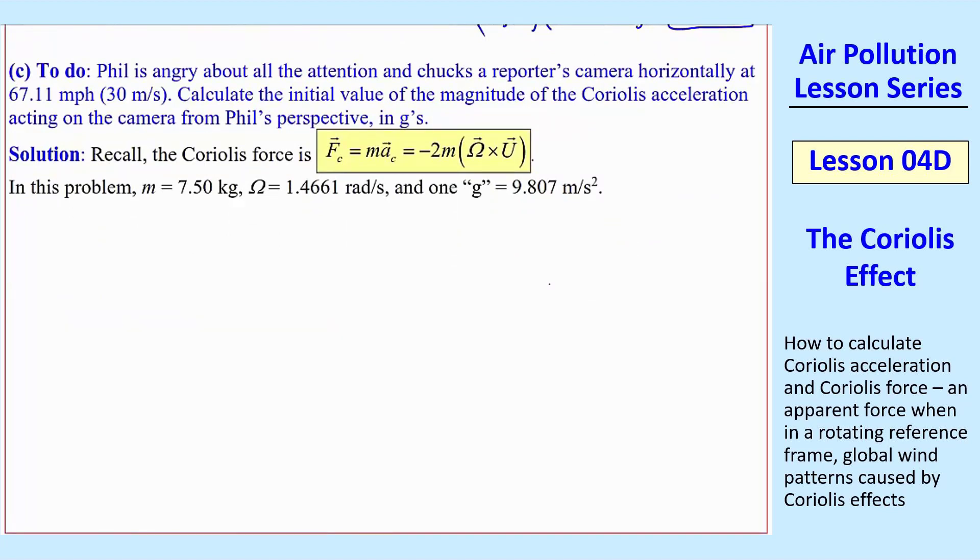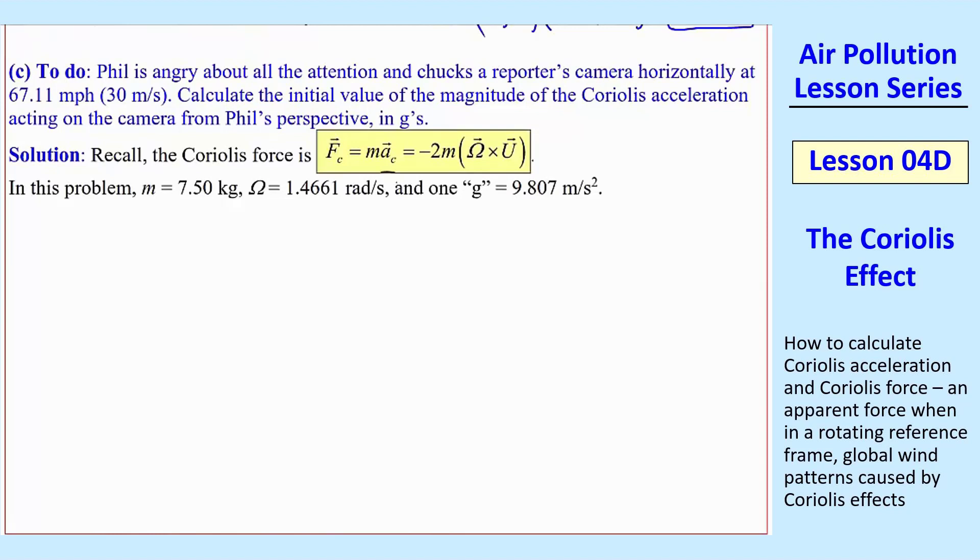Now let's do the actual Coriolis force. This time, in Part C, Phil's angry about all the attention, and he chucks a reporter's camera horizontally at 67.11 miles per hour, 30 meters per second. So we want to calculate the initial value of the magnitude of the Coriolis acceleration on the camera in Gs. We'll look at acceleration, not force here. So let me write down the acceleration, AC, and we're going to look at the magnitude of it.